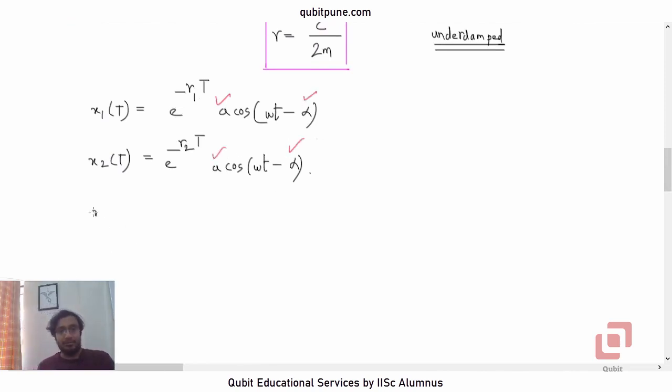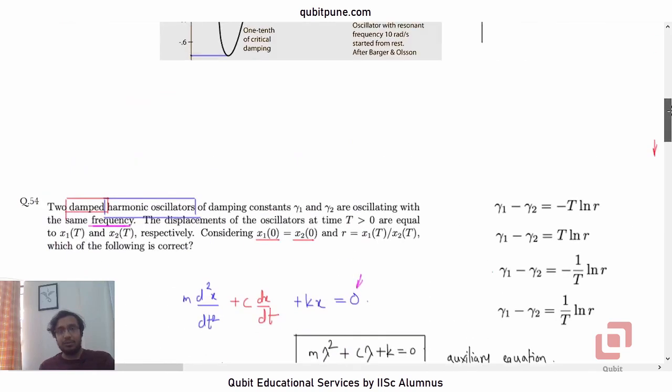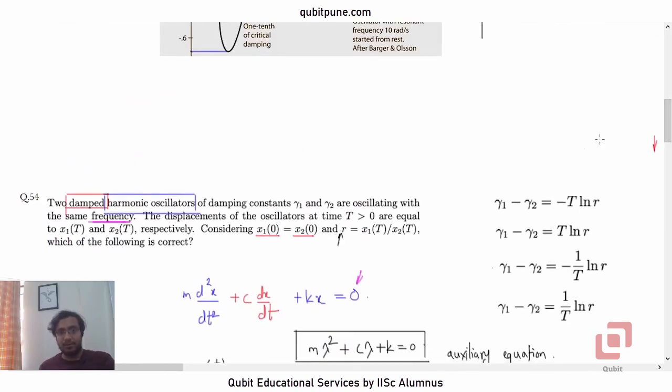Now, let us take the ratio x₁(t)/x₂(t). That is what we want. So now, a and cos(ωt - α) they will get cancelled. And what you will be left with is e^(-t(γ₁ - γ₂)). But what is x₁/x₂? That is r. x₁/x₂ is r.